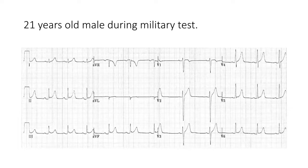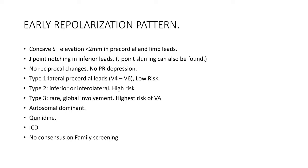The most likely diagnosis in this case is early repolarization pattern. If this patient presents with syncope, it will be called early repolarization syndrome — you must write early repolarization pattern or early repolarization syndrome, not the old term. The obvious findings are ST elevation of less than 2 mm in precordial leads, J point notching in the inferior leads, and possibly J point slurring. There are no reciprocal changes (differentiating it from acute ischemia) and no PR depression (differentiating it from pericarditis).